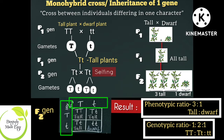We fill in the Punnett square. Capital T fuses with capital T → tall plant (TT). Capital T fuses with small t → tall plant (Tt). Small t fuses with capital T → tall plant (Tt). Small t fuses with small t → dwarf plant (tt). So we have 4 plants in the Punnett square.